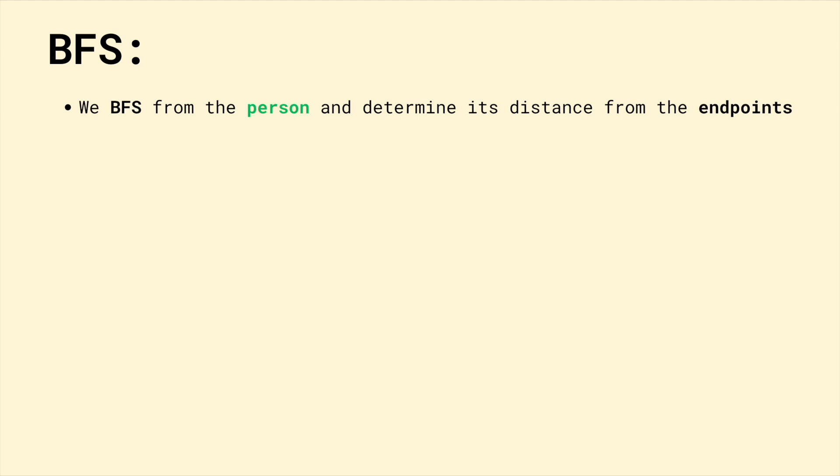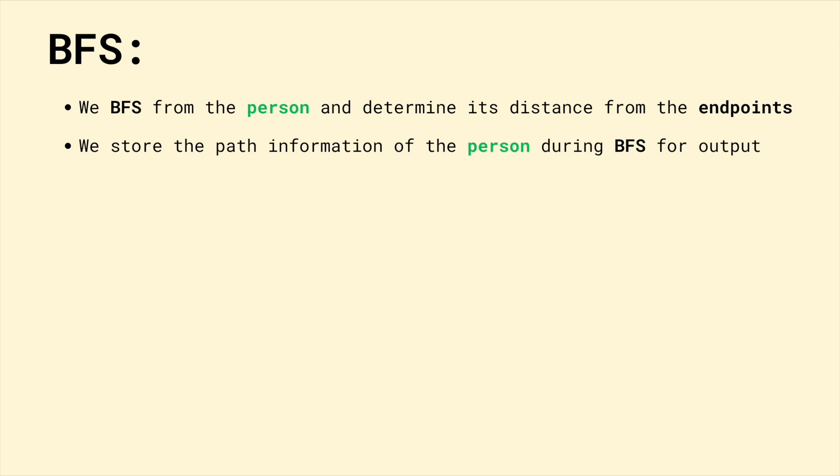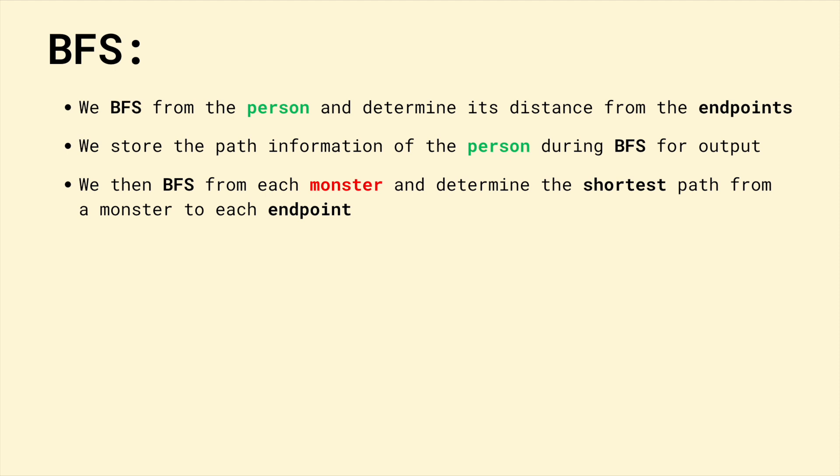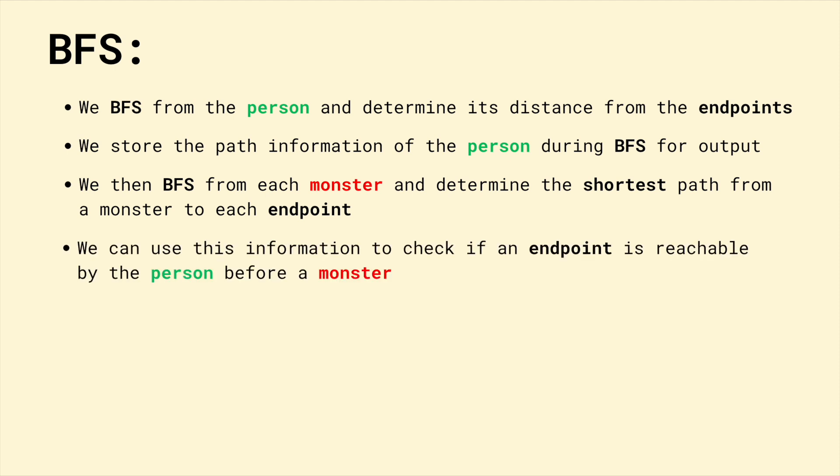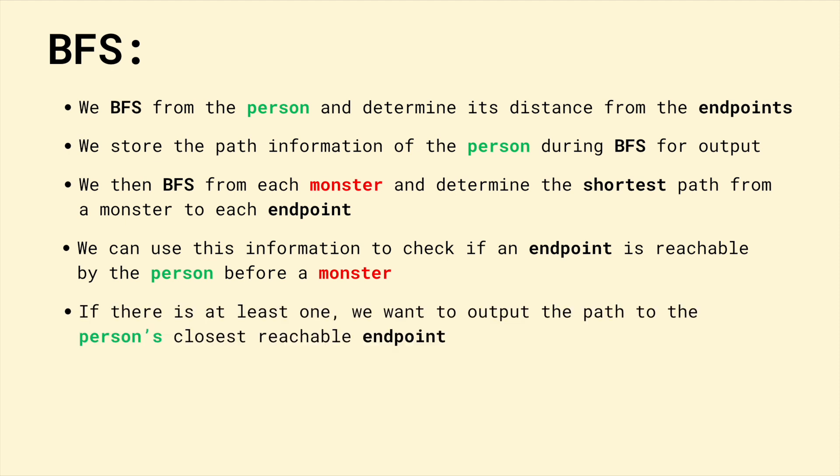Let's take a look at what this BFS would look like. We need to first BFS from the person and determine its distance from every endpoint. After that, we store the path information because we need to reconstruct the path at output. After that, we BFS from each monster and determine the shortest path from each monster to an endpoint. If an endpoint is reachable, it means the person must reach it before a monster. Thus, if there is at least one reachable endpoint, we want to output the shortest one. If there are no reachable endpoints, we indicate so by printing no.